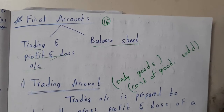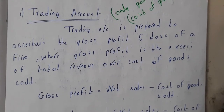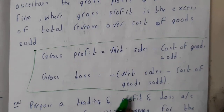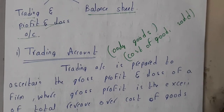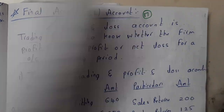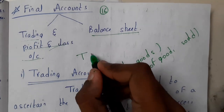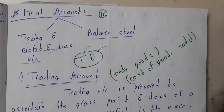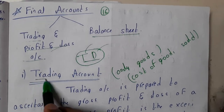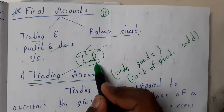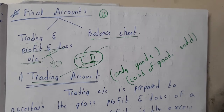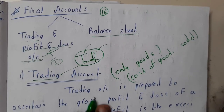So let us start with the trading account. You can learn the formula, but I'll explain it with the help of a table. So what is a trading account? Remember: T means D — trading deals with direct expenses. In the next lecture we'll go to profit and loss, which deals with indirect expenses, so that's the key difference.